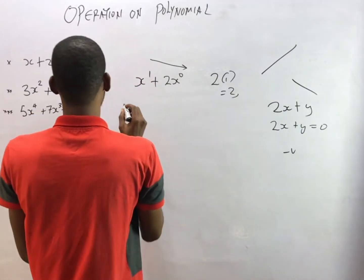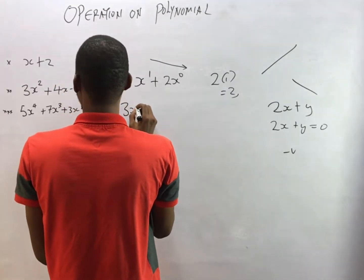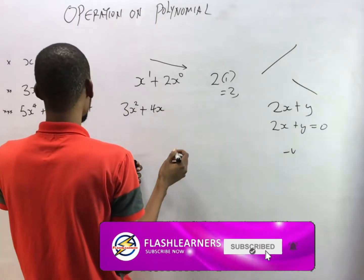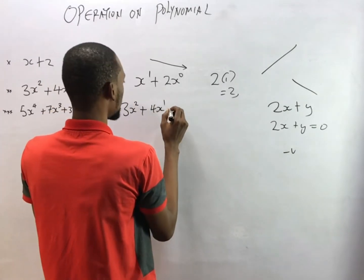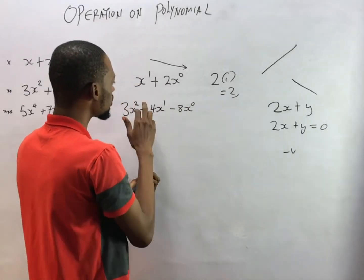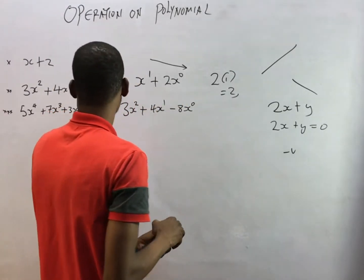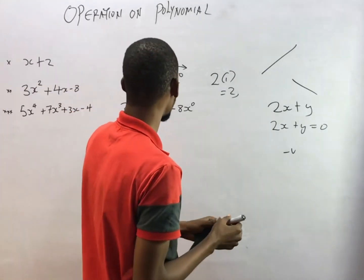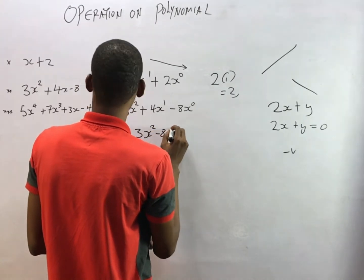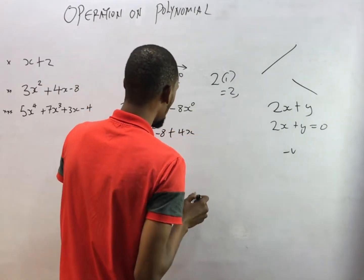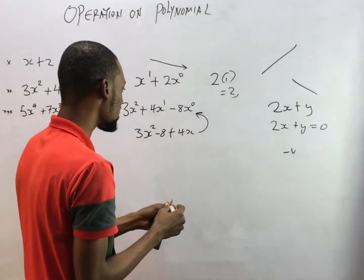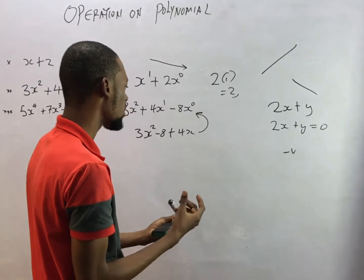Now look at this other one. This is 3s squared plus 4s. 4s is the same thing as 4s raised to the power of 1, then minus 8, which is 8 times s raised to the power of 0. So this is descending: 2, 1, 0. Sometimes you may be given a polynomial written like this — 3s squared minus 8 plus 4s. When given something like this, you rearrange it into this form to have either ascending or descending power of variable.